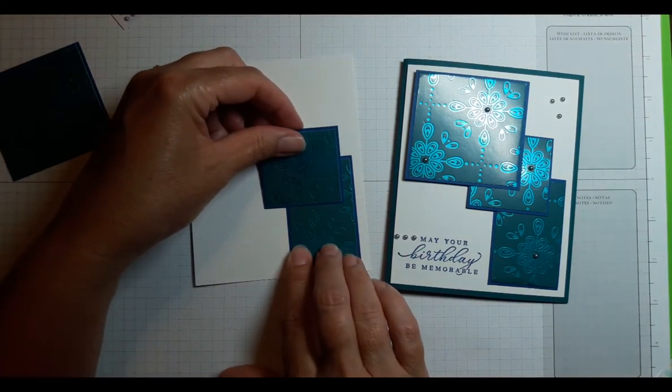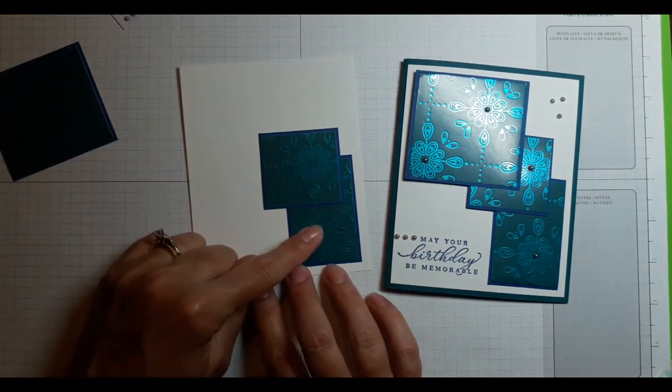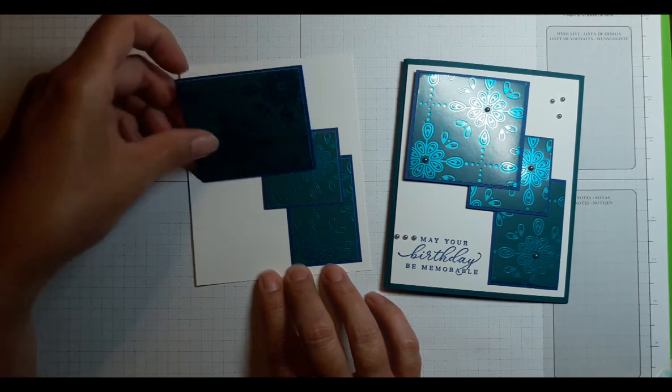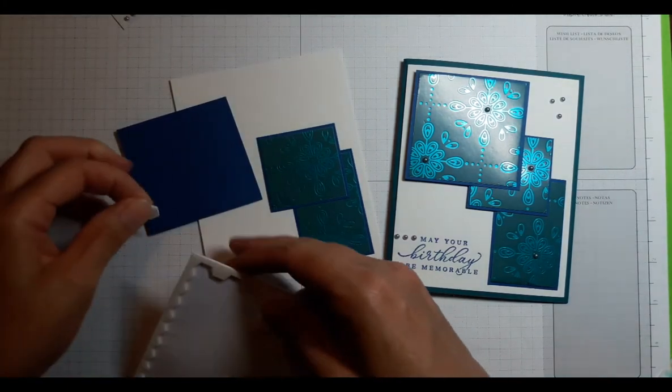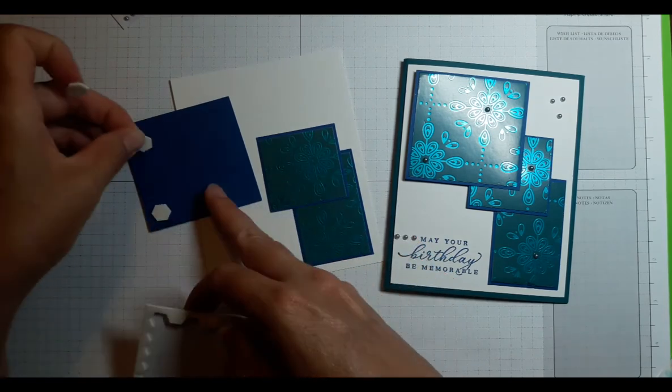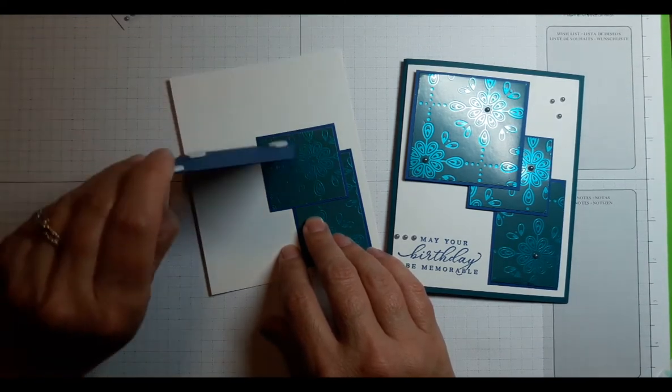Now this top piece is sticking up quite a bit because there's two layers of cardstock here and two layers of cardstock here so I'm going to put dimensionals on those three corners that are going to be popped up and then I'll just put regular adhesive and let me just double check and make sure that that is correct.